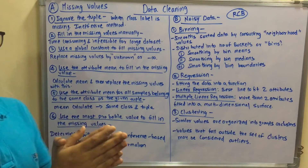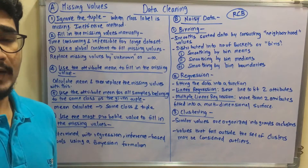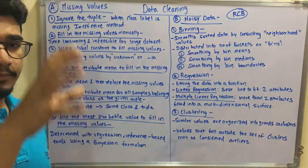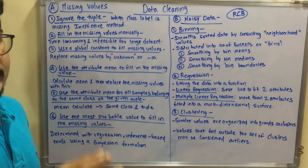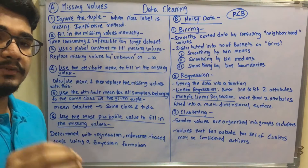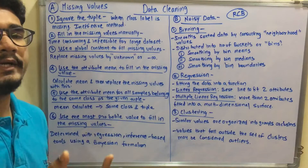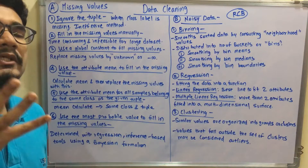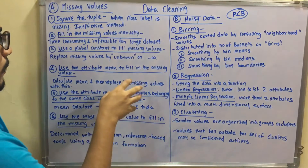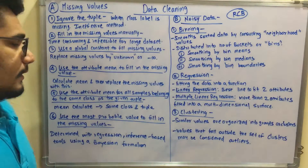Next, we use the attribute mean to fill in the missing values. For a particular column — say age or marks — you calculate the mean for that attribute, and then whichever cells or value attributes are missing, you fill them with that mean. For age, for example, you calculate the summation and then replace missing values with the mean of that particular attribute.